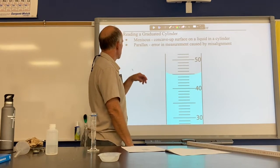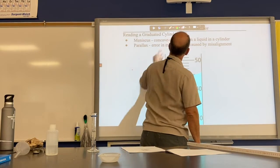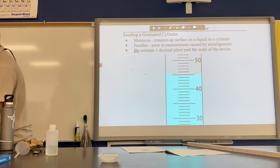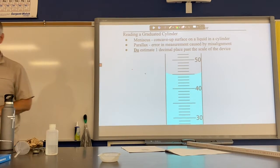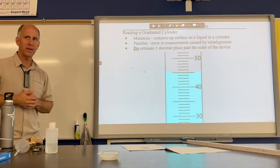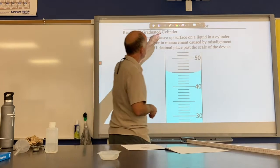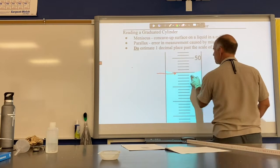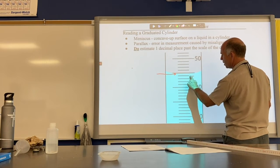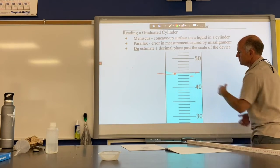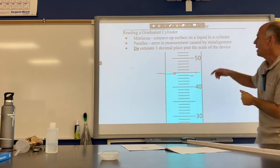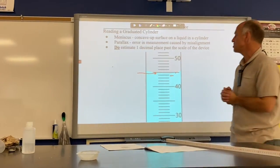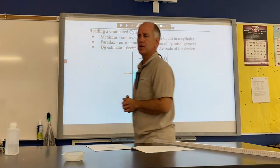The last thing to discuss with graduated cylinders is estimation. Because this is an analog scale, we will estimate one decimal place past the accuracy of the device. For example, if the marking is between 44 and 45, measuring from the bottom of the meniscus I would record 44.8 — the 8 is the estimated digit, and the units are milliliters.